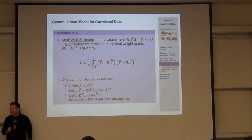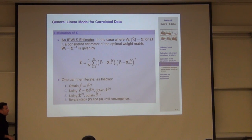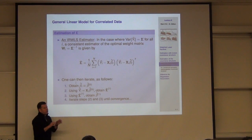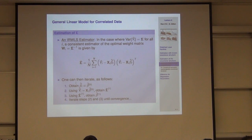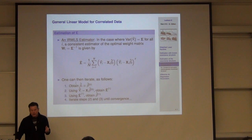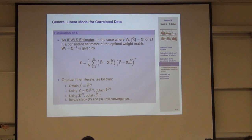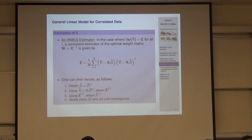Let's recap briefly what we did last time. We started thinking about the correlated data problem with a continuous response. The natural way to go about that, given what we know, is to start off with weighted least squares — minimizing the sum of squared residuals in a weighted fashion, because you do not have homoscedasticity. You don't have a nice diagonal variance structure. There's correlation, largely due to sampling designs like measuring the same subject over time, clustering in classrooms, or related individuals in families.